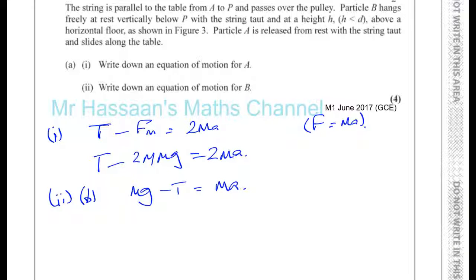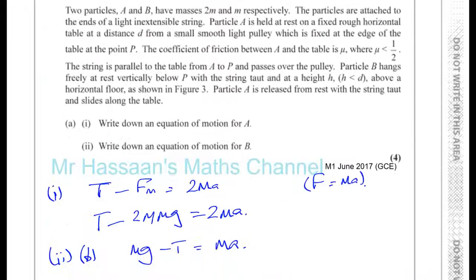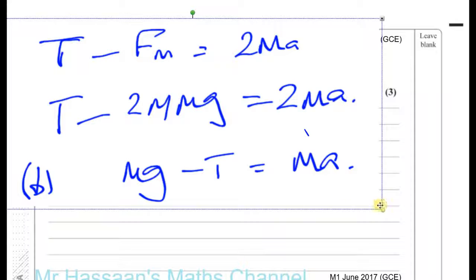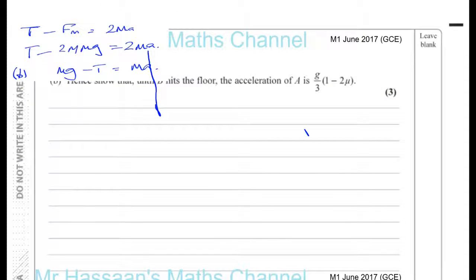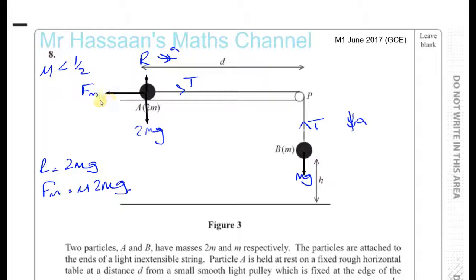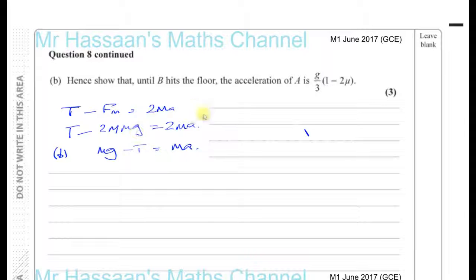Part B says: hence show that until B hits the floor, the acceleration of A is given by g over 3 times (1 minus 2μ). Let's take the two equations we just formed. This is equation 1 and this is equation 2. If I do equation 1 plus equation 2, the T's will be eliminated.